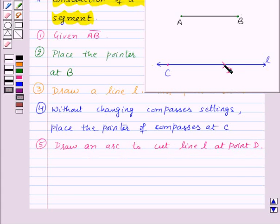So this is the point D. Thus, line segment CD is a copy of line segment AB.